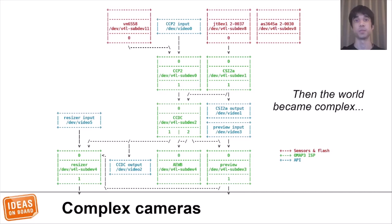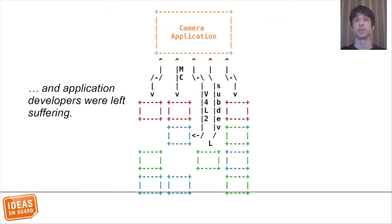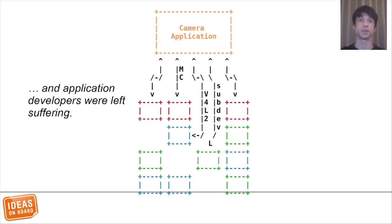Every SoC platform has differences. The media controller API and V4L2 extensions were designed to expose the full features of the ISP to user space. The problem is that all of the burden of managing the camera pipeline is placed on applications. They now have to program the sensor and ISP parameters, capture raw frames, pass them to the ISP, capture statistics from the ISP, and implement image processing algorithms — all of which is different for every device.